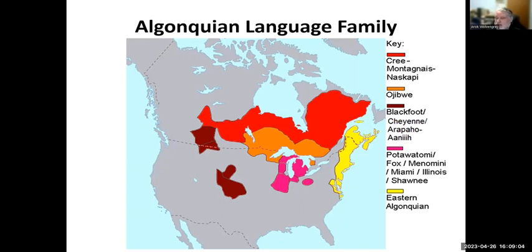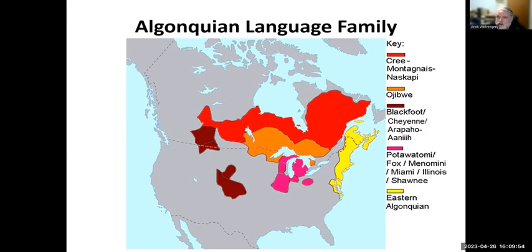The Algonquian language family is a very large language family covering a large territory in North America. This color-coded map breaks things up in terms of geographic locations of the languages. The Eastern Algonquian area on the East Coast is the only one that's a genetic subgroup within the family, and most if not all of these languages are very seriously endangered. The southernmost Eastern Algonquian languages are not spoken anymore. As you work northward, you get languages like Abenaki and Delaware with just a few speakers left, and Mi'kmaq in Nova Scotia has a fairly strong speaker population but still faces decreasing numbers.